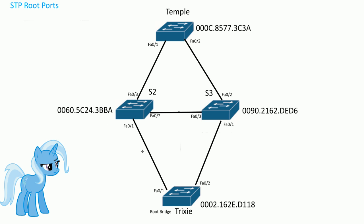The lowest cost path to the root bridge determines our root port. We have three different kinds of ports: the root port, which goes towards the root bridge; designated ports; and alternate or blocked ports. The first step after electing a root bridge is to find the root ports. The port with the lowest cost to the root bridge becomes the root port.